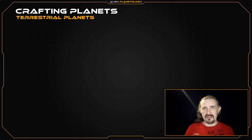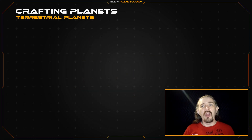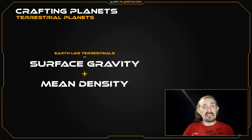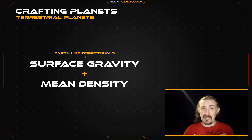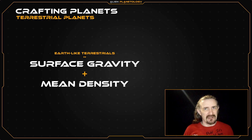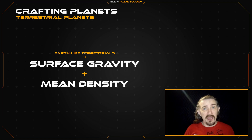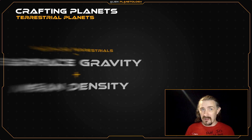When crafting Earth-like terrestrials, the best parameters to define first are the surface gravity and mean density. This is because the surface gravity directly impacts your characters and how they interact with the planet, so it's definitely a property that you'll want to have control over. And the mean density is critical to the planet's realism, as it is an indication of what your planet is made of.